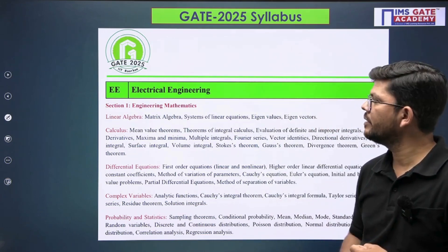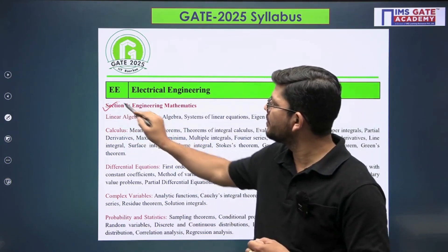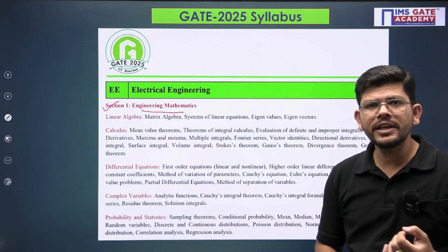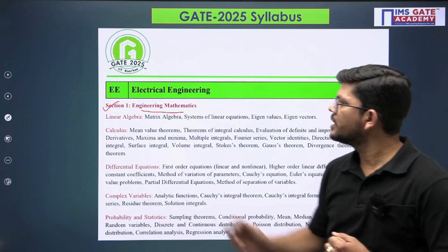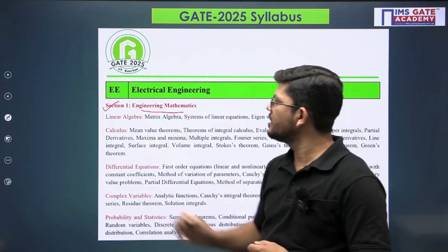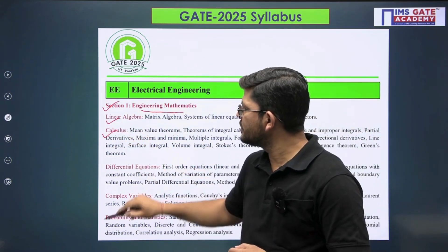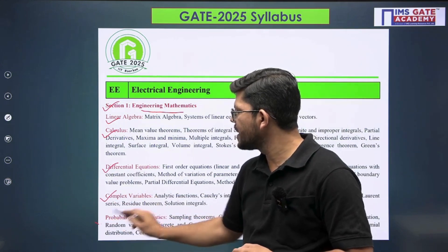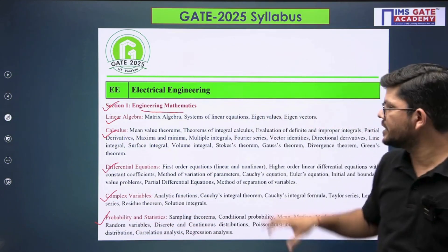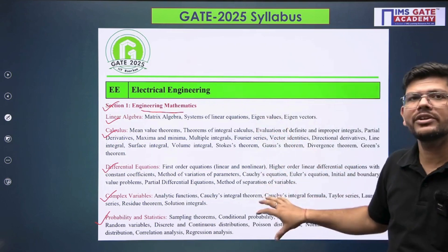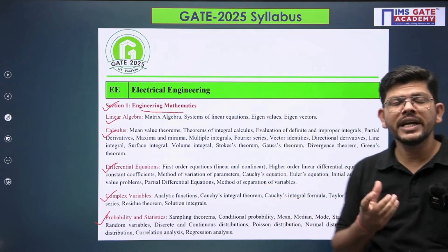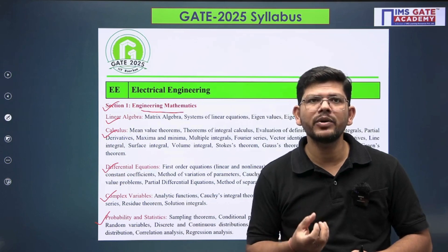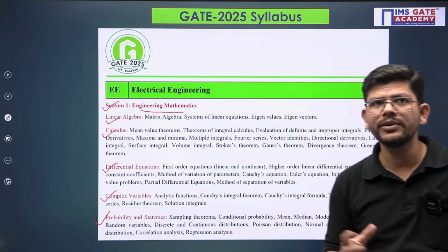In section number one, we have Engineering Mathematics. The topics include linear algebra, calculus, differential equations, complex variables, probability, and statistics. You can refer to the syllabus to see exactly what to cover. Mathematics is a very important subject with a weightage of around 13 to 15 marks in the exam.